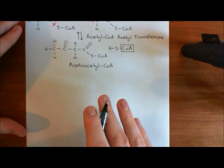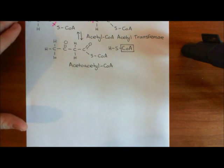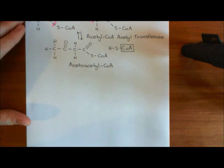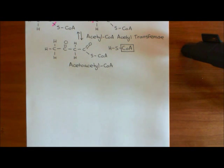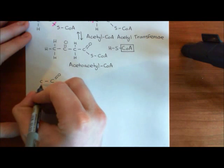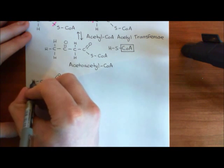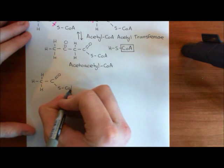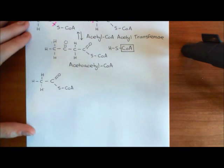Now what's going to happen is this acetoacetyl coenzyme A is going to be bound to another molecule of acetyl coenzyme A. Remember, we need to bind together three molecules of acetyl coenzyme A overall to create the mevalonate molecule. We've bound two so far, so we need to add in a further one. So let's bring in a third molecule of acetyl coenzyme A and add it onto our molecule of acetoacetyl-CoA.